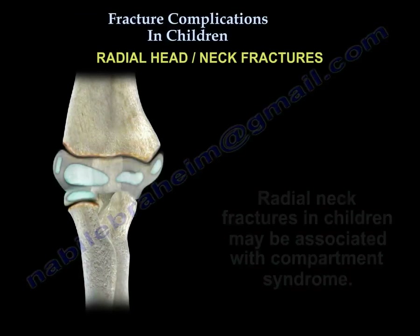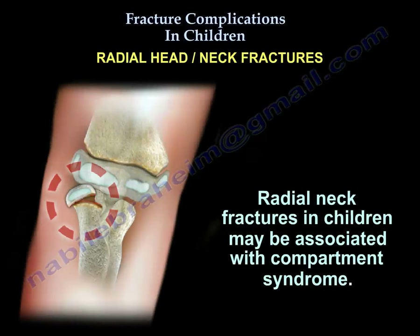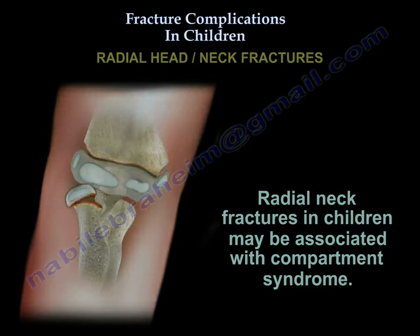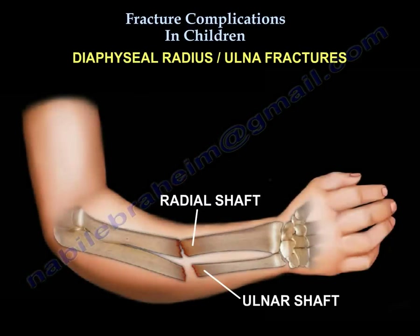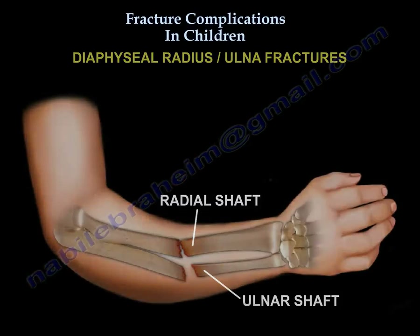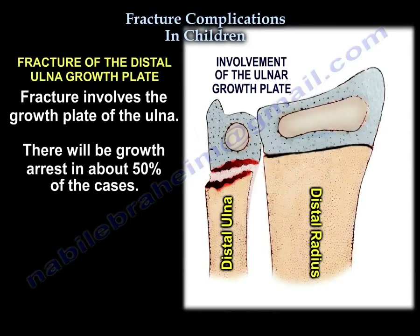Radial neck fracture in children has an association with compartment syndrome. Mid-diaphysis radius and ulnar fractures will lead to refracture, especially after removal of the hardware. Growth plate injury of the distal ulnar can give growth arrest in about 50% of cases.